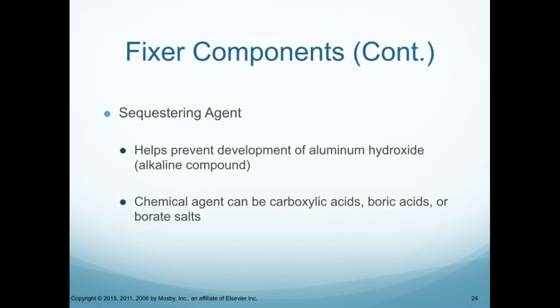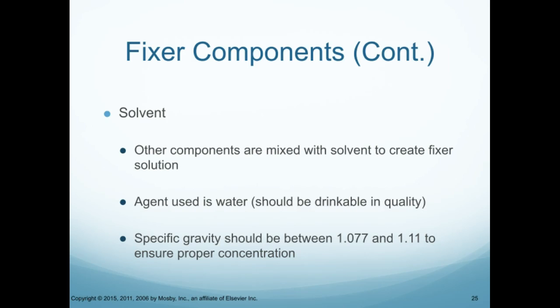The sequestering agent in the fixer helps prevent development of aluminum hydroxide. The chemical agent can be carboxylic acids, boric acids, or borate salts. The solvent within the fixer — other components are mixed with it to create the fixer solution. The agent used is water and should be drinkable in quality, meaning it should ideally be filtered. Specific gravity should be between 1.077 and 1.11 to ensure proper concentration.